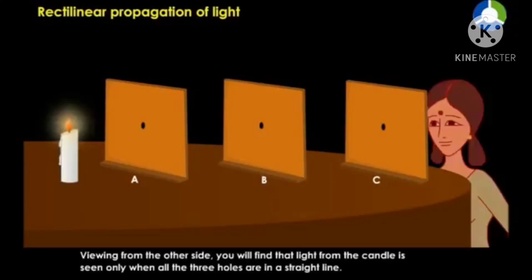Viewing from the other side, you will find that light from the candle is seen only when all three holes are in a straight line.